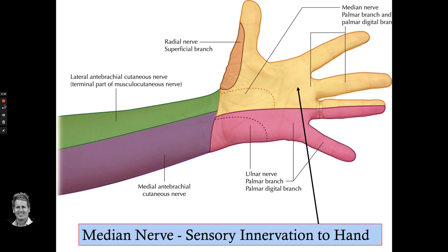Looking at another sensory diagram: the median nerve via the palmar digital branch covers the thumb, index, middle, and half the ring finger on both palmar and dorsal surfaces. The ulnar nerve covers the other side. The anti-brachial and musculocutaneous nerve cover the lateral aspect, but the focus here is the median nerve distribution.